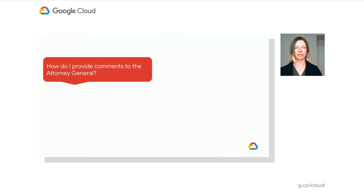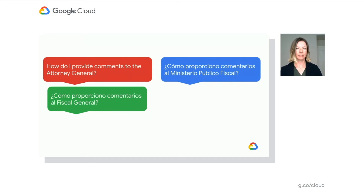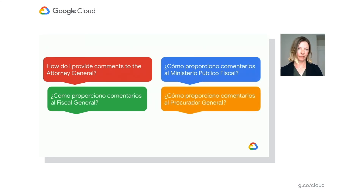Now let's talk about what we can do to modify content to better represent different possible translations within a language, depending on the industry context or location. In a public sector scenario, a common thing is wanting to provide comments to a public agency — say the attorney general. In Spanish, there's a pretty common translation for "attorney general," which is "fiscal general," and machine translation would automatically select this. But in Latin America, they might use "Ministerio Público Fiscal." And in California, they have a pre-described glossary that refers to their attorney general's office in Spanish as "Procurador General."